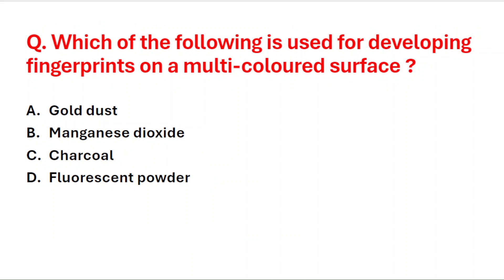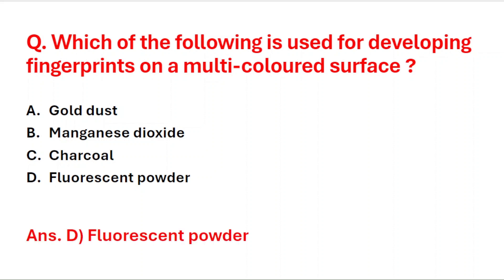Next question: which of the following is used for developing fingerprints on a multicolored surface? A: gold dust, B: manganese dioxide, C: charcoal, D: fluorescent powder. The right answer is option D, fluorescent powder.